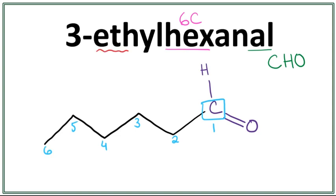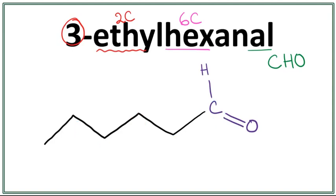Now there is an ethyl here, which means that there are two carbons in the side chain. The ethyl is attached on the third carbon right here. So let's get rid of these numbers and attach the ethyl on the third carbon. This is the structure for 3-ethyl hexanol.